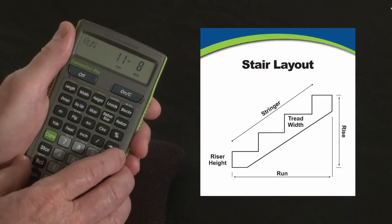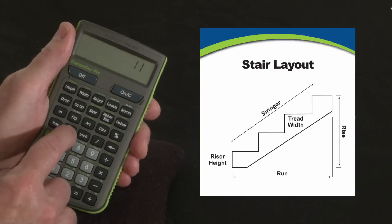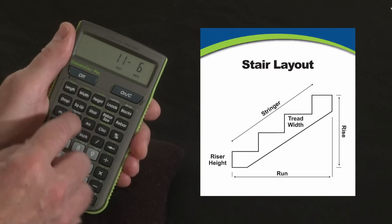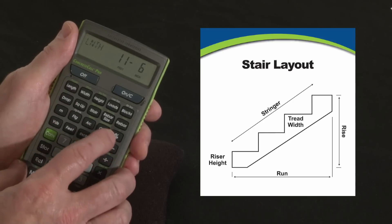Now for our next example let's assume that you're doing a stairway into a basement and you've got a horizontal run constraint where the maximum run you can do is eleven foot six. That's as far as you can go toward that wall. So let's come back and put eleven feet six inches as our length. Now go back through the stair routine.